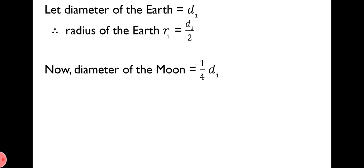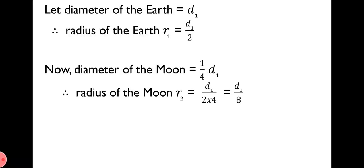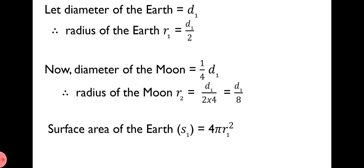Therefore, radius of the moon R2 = D1/(2×4) = D1/8. Now, surface area of the earth S1 = 4πR1² = 4π × (D1/2)² = πD1². Here, squaring the 2 gives 4, which cancels with the 4 in front, giving S1 = πD1².